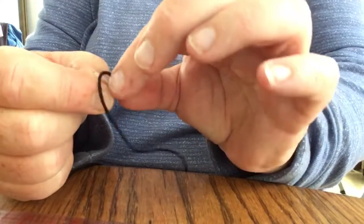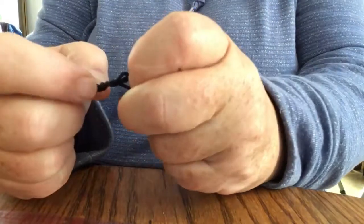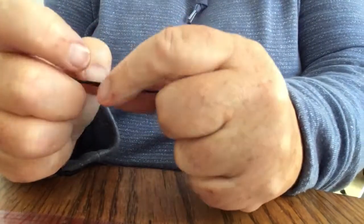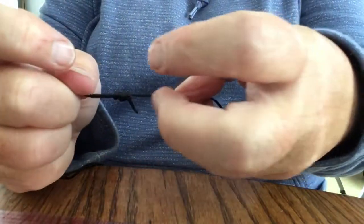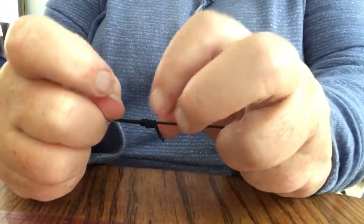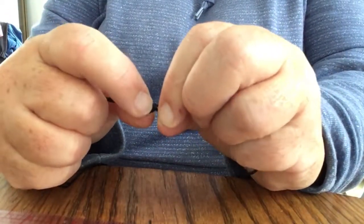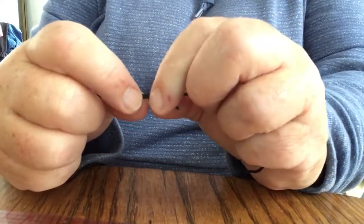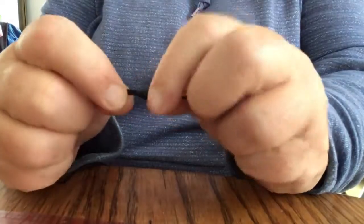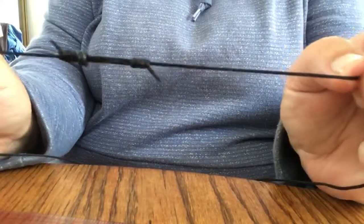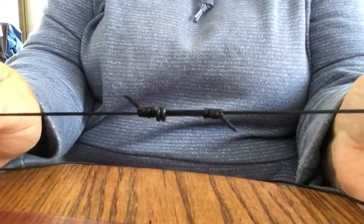Snug everything up by pulling the long cord while holding the tail, snugging those loops so everything is nice and firm. You now have a finished double slip knot.